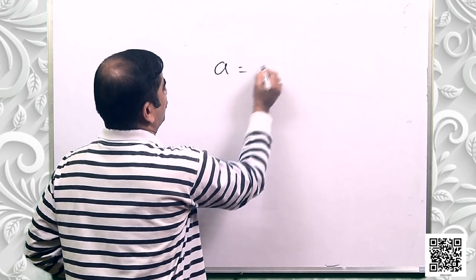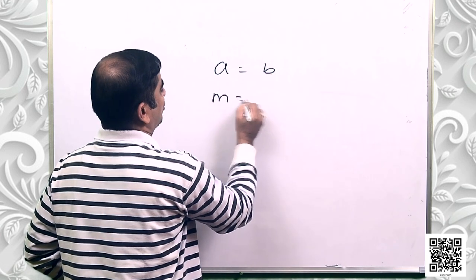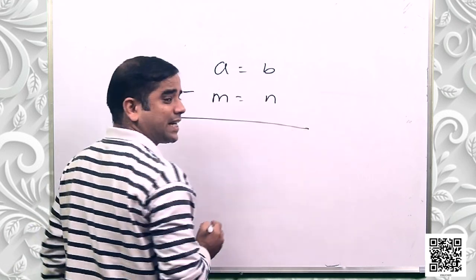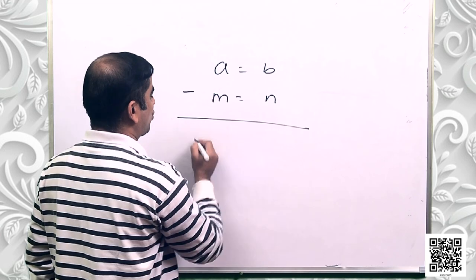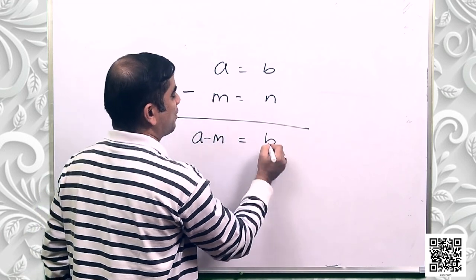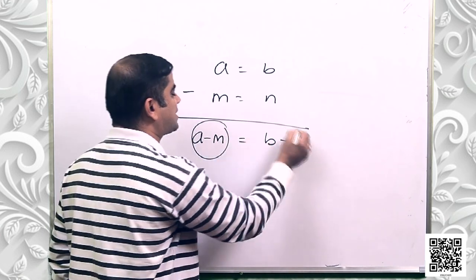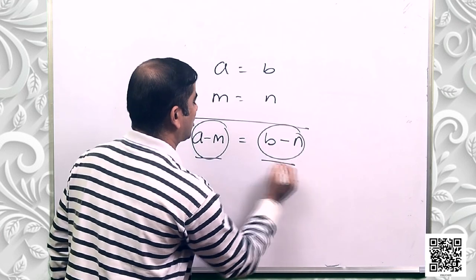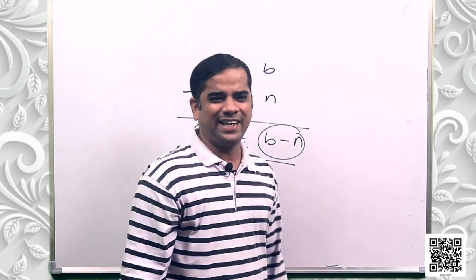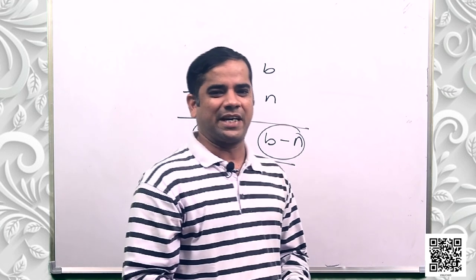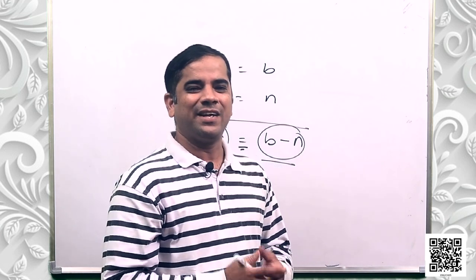The third axiom says that if equals are subtracted from equals, the remainders are equal. If A equals B and M equals N, then A minus M equals B minus N. When equals are subtracted, the results are also equal.